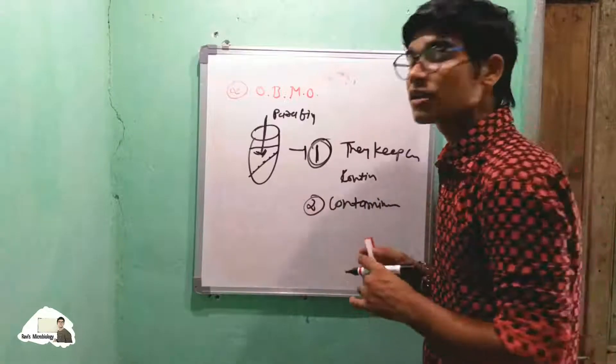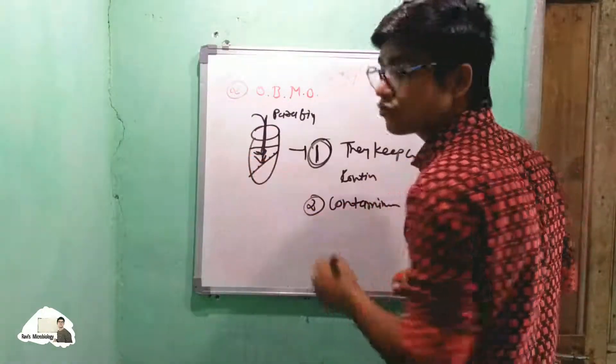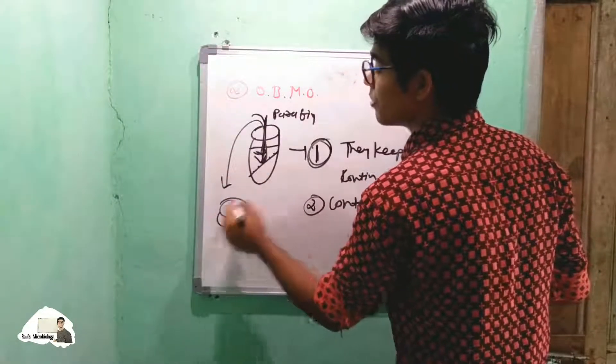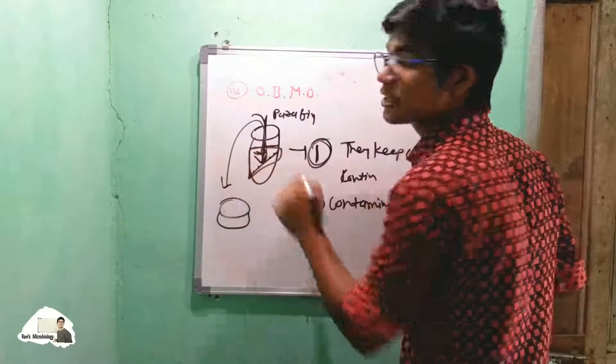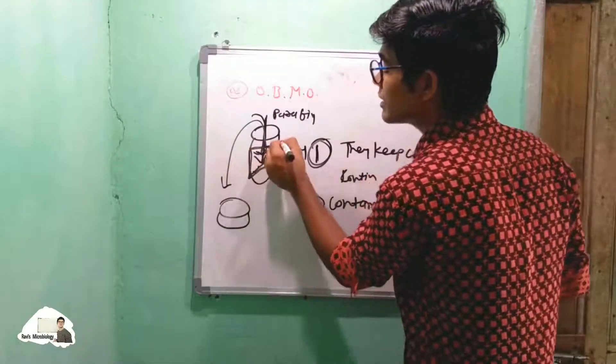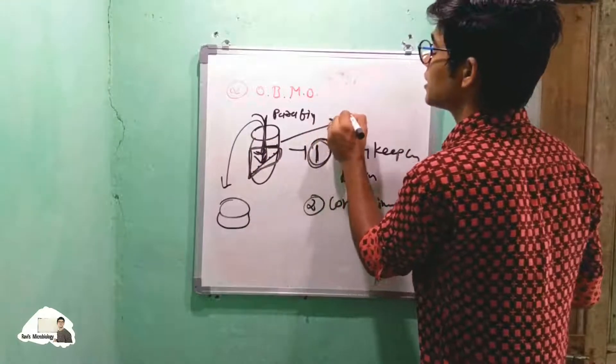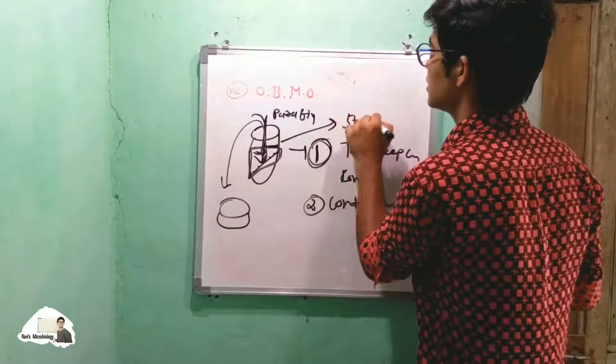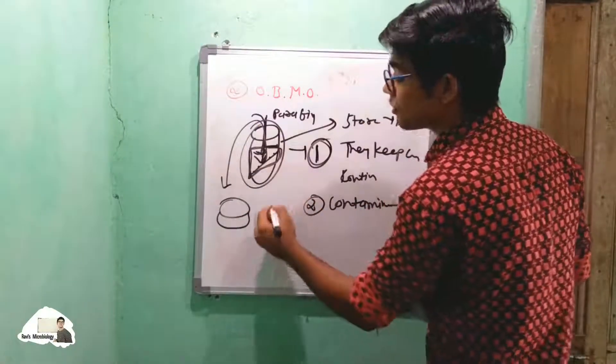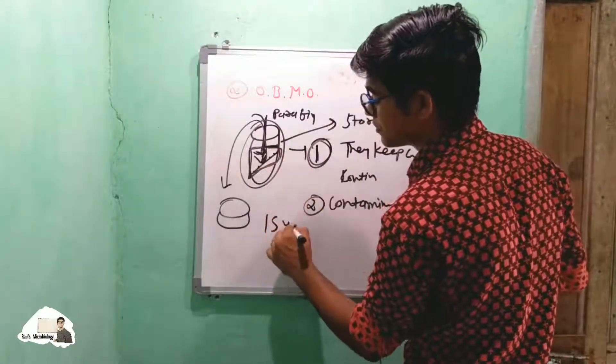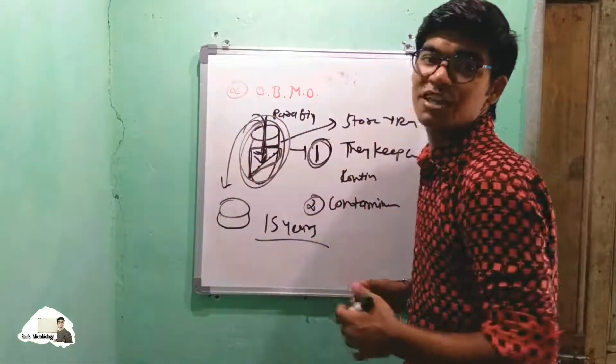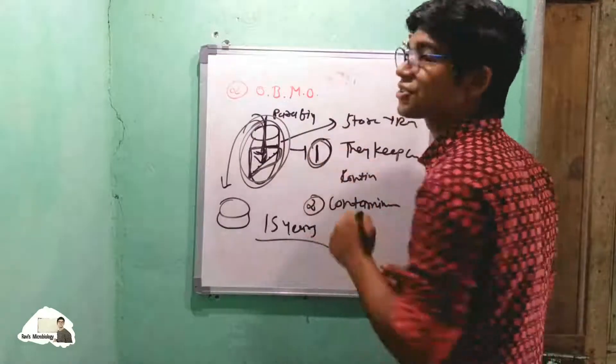If we want subculturing, we use a loop for culture and transfer into various agar plates. This culture remains contamination-free due to the oil, and the slant is stored in a refrigerator. This simple method can preserve organisms up to 15 years. The simplicity of this method attracts laboratories for the preservation of different microorganisms.